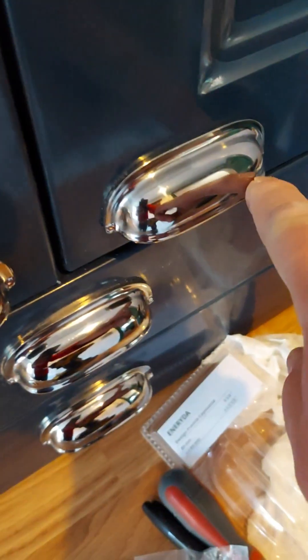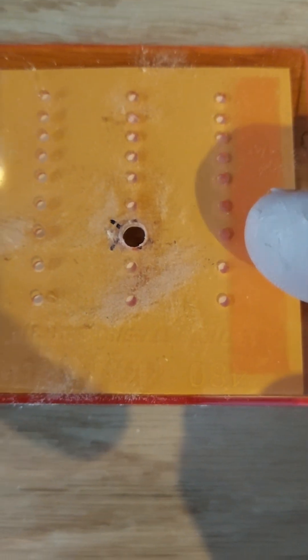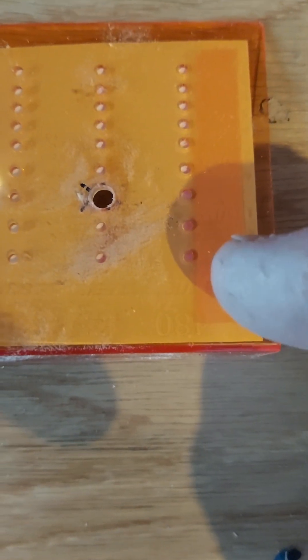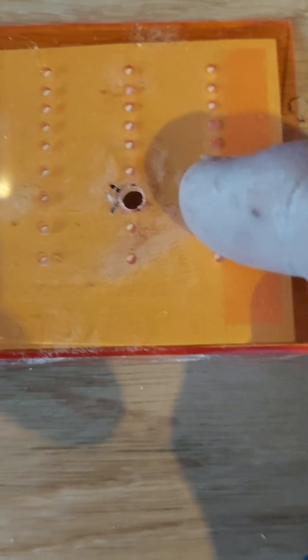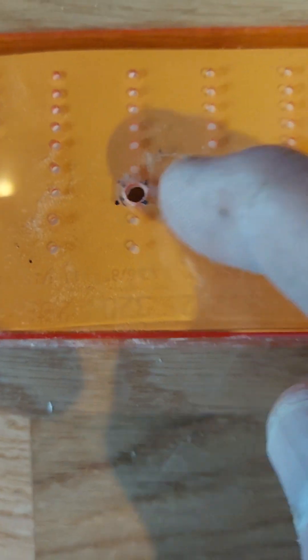To do the door handles like these ones here, you need to go up one, two, three and then across one, two. So that's up three and across two. Because these are 64 apart, you use one, two, three spaces and then there's the next hole.